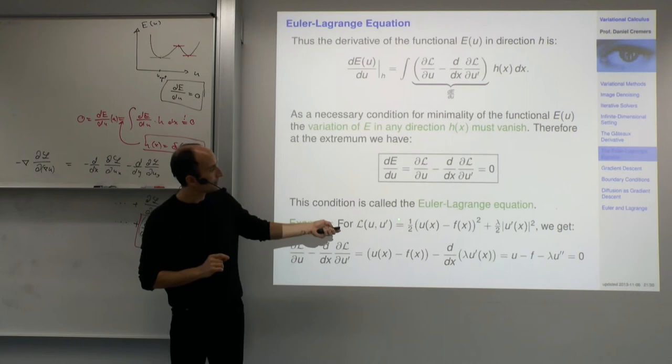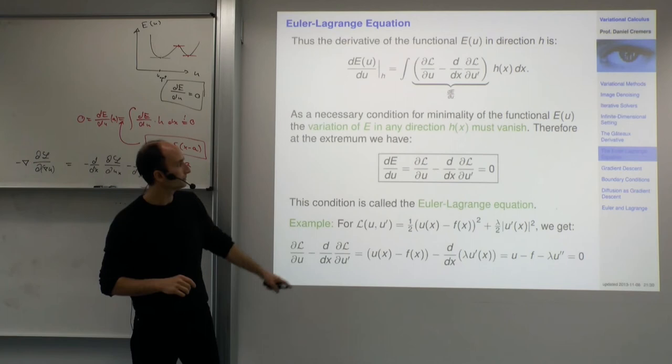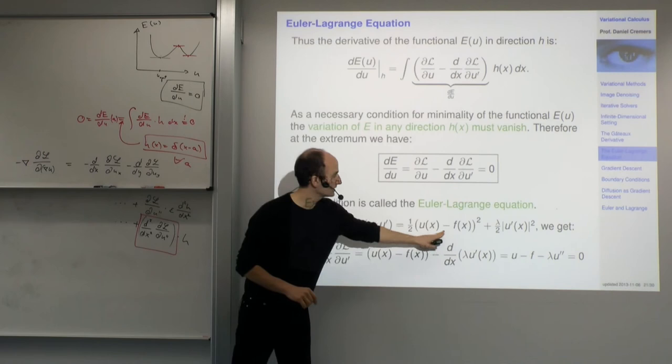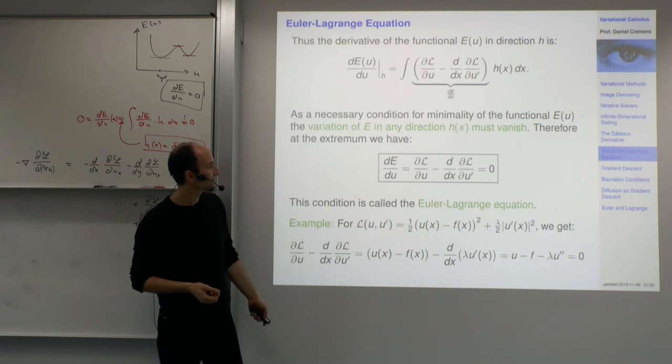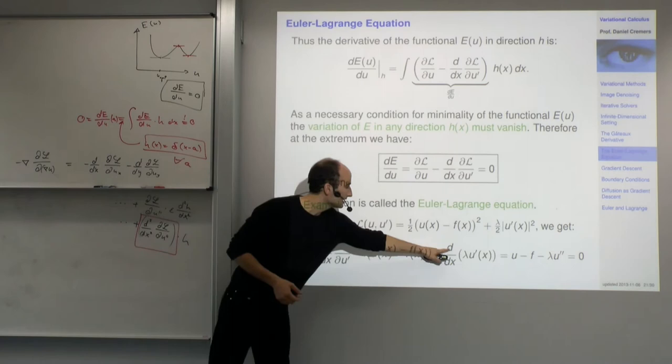Let's look at the denoising example. Plugging in, the derivative of L with respect to u: we check where u appears, take the derivative — it's just u minus f, linear in u because the term is quadratic. Then we have minus d by dx times the derivative of L with respect to u prime. u prime appears there, so we get lambda u prime.